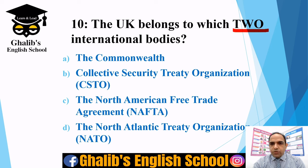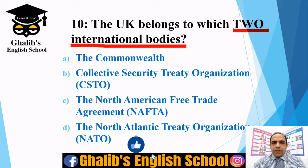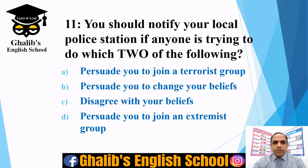Question ten: identify two international institutions from the following — the Commonwealth, the Collective Security Treaty Organization (CSTO), the North American Free Trade Agreement (NAFTA), or the North Atlantic Treaty Organization (NATO). The correct options are the Commonwealth and NATO — the UK is part of both of these international bodies.